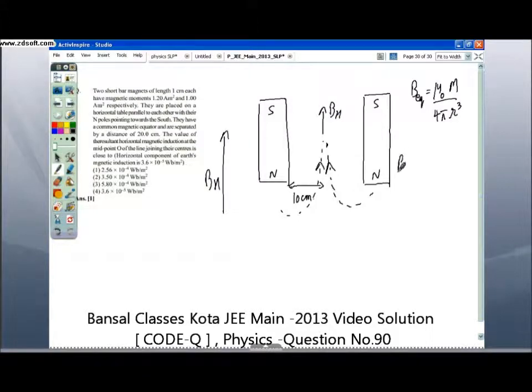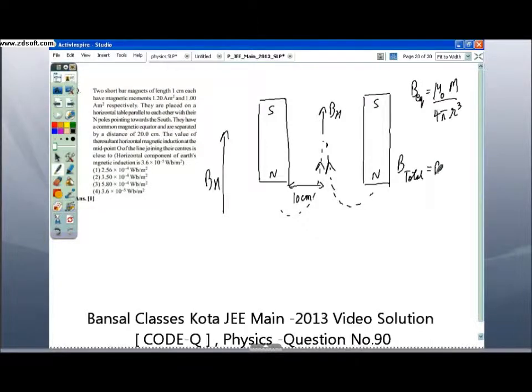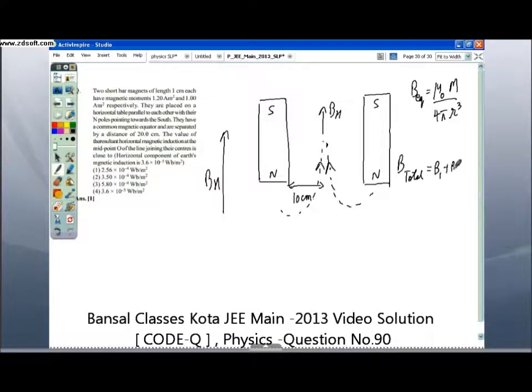Since the total field will be equal to B due to bar magnet 1 plus B due to bar magnet 2 plus the component of earth's magnetic field, this total comes out to be equal to 2.56 times 10 raised to power minus 4 tesla.